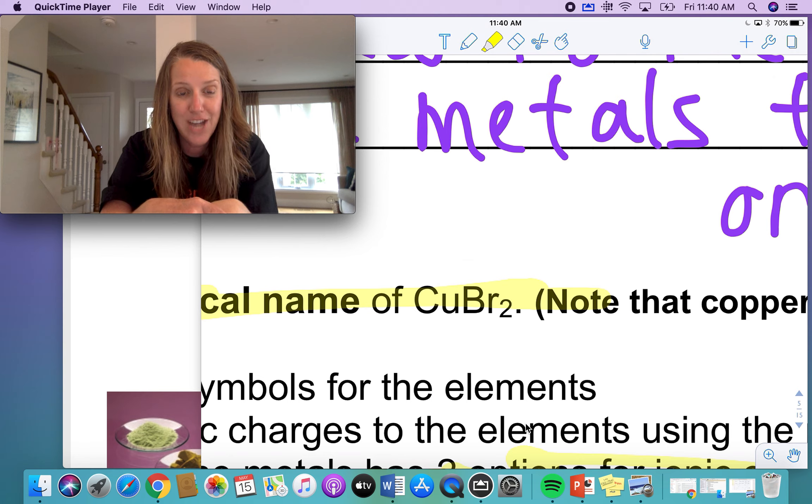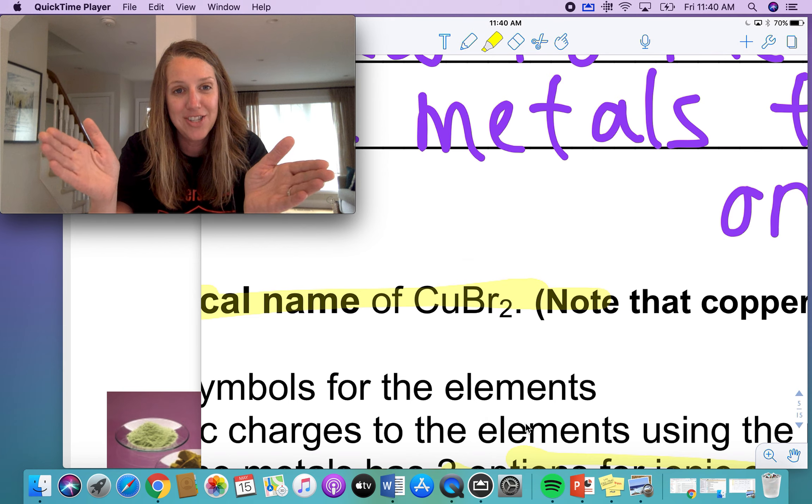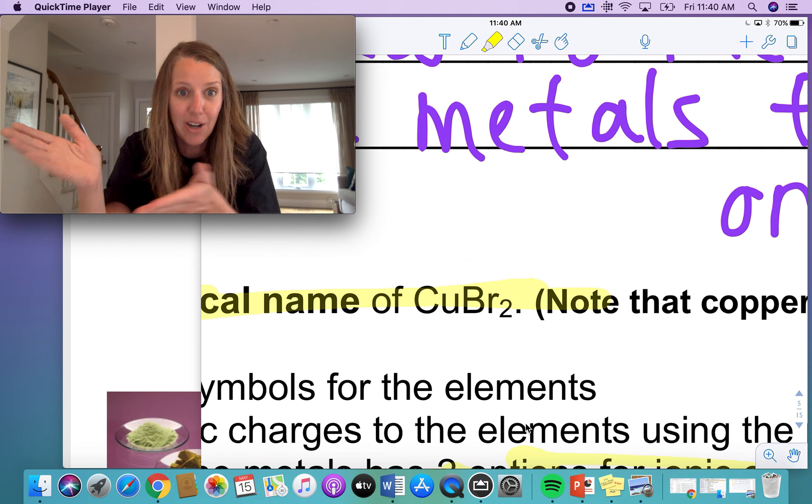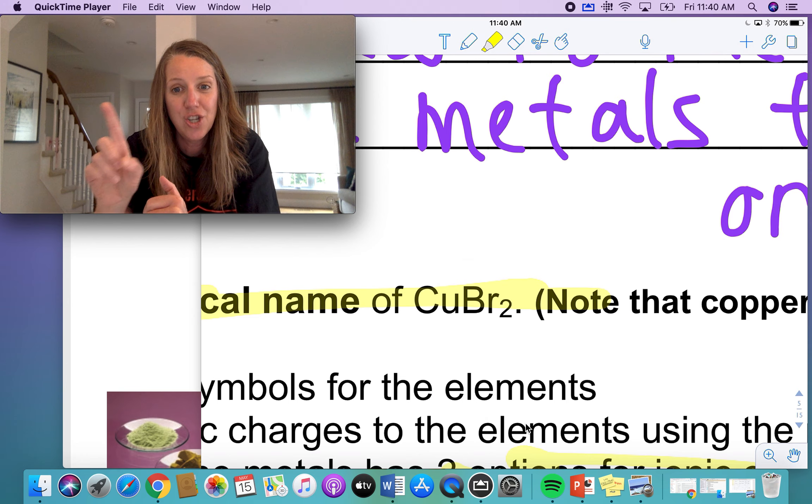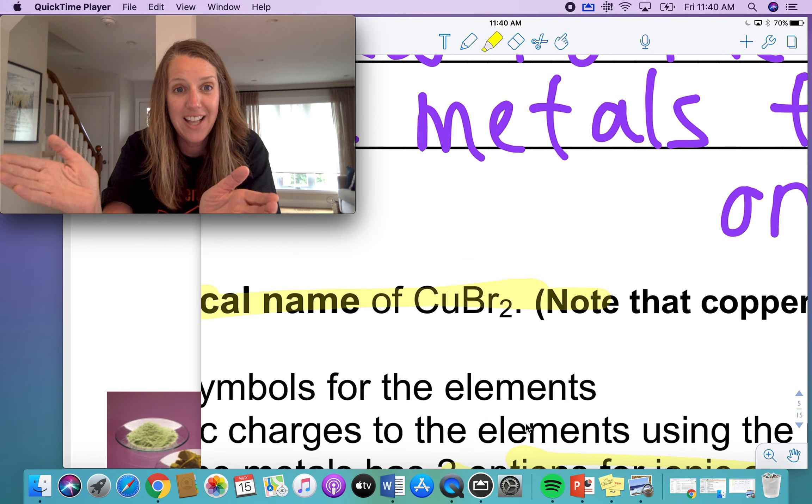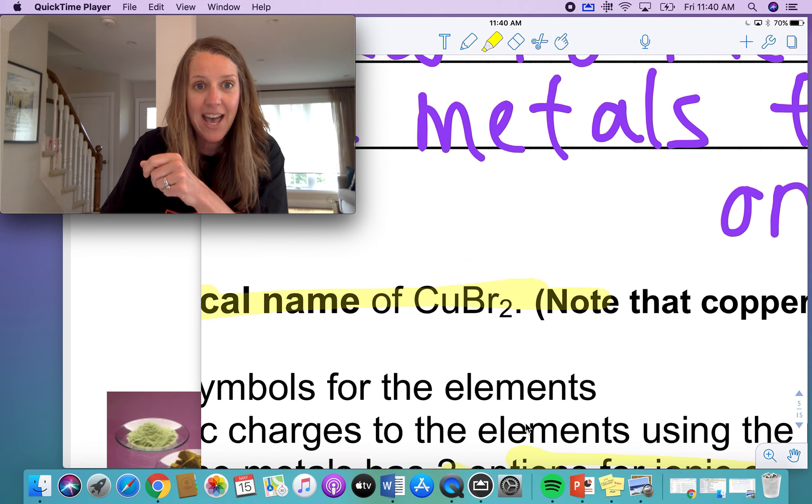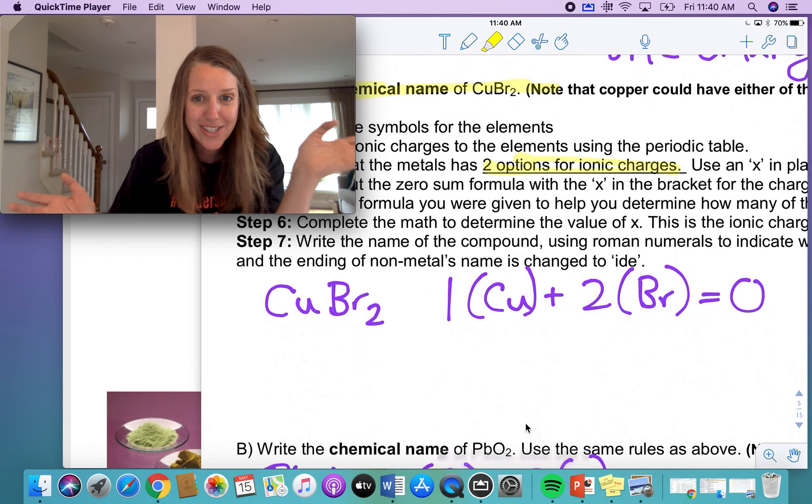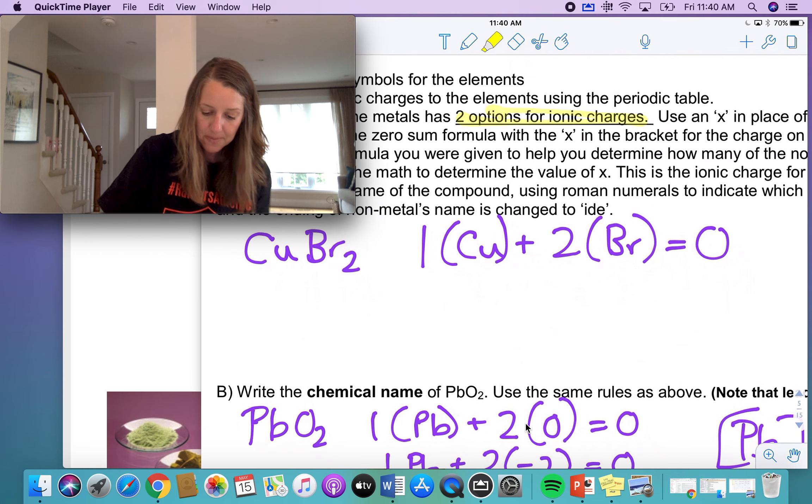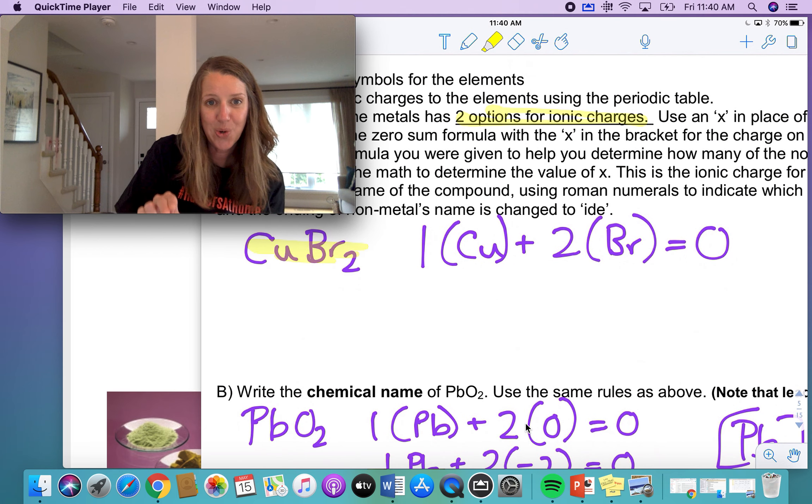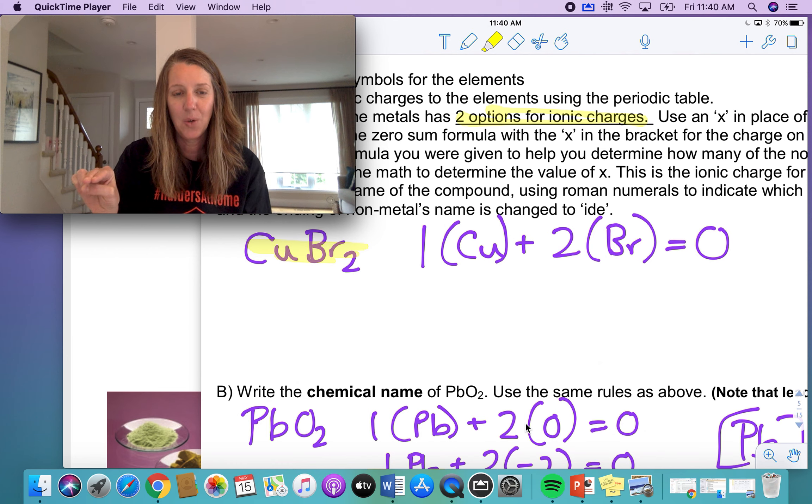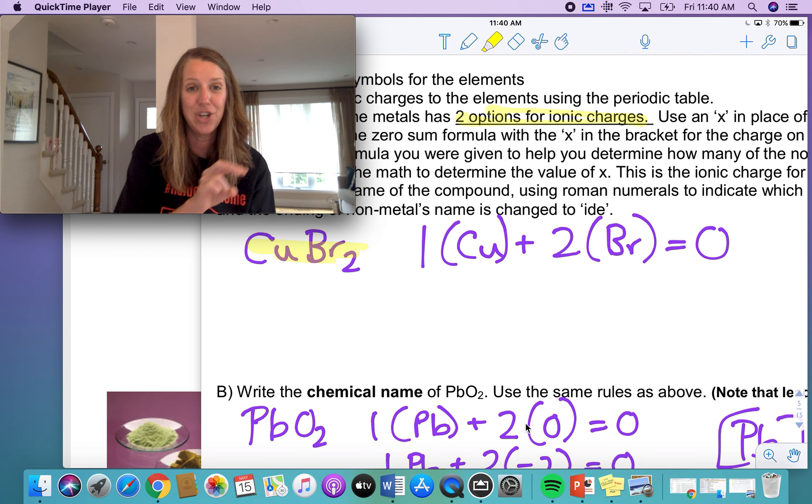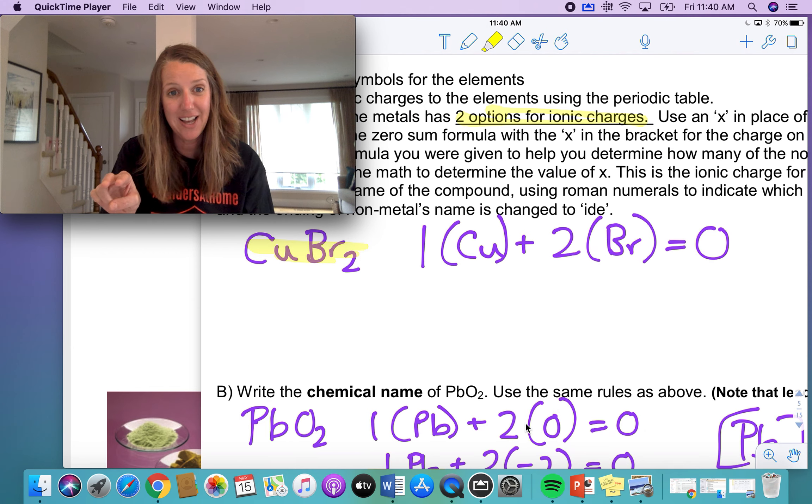I know that the copper charge has to be a two plus charge because bromine is a one minus. And to have a compound that has zero sum rule of zero, the sum has to be zero. I know that I need one thing with a two plus charge, two things with a one minus charge to validate that rule. Here's the math. If you need to show your work for that, which of course you always need to show your work, you're going to write it out like this. So I know what the formula is and my task is to come up with the name. We'll also do the reverse of this where you're given the name and you have to do the formula.